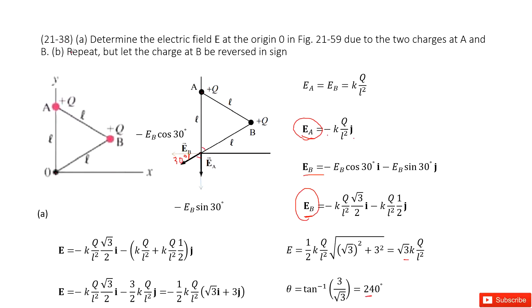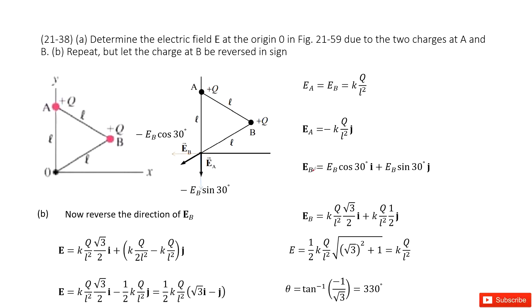The next part: repeat, but let the charge at B be reversed in sign. So that means B will become negative Q. When it becomes negative Q, everything is the same except we change the sign. So we need to change EB to positive. So positive and positive. This is how we do that: we just change the sign for EB to positive.